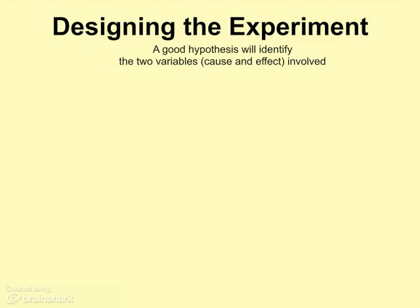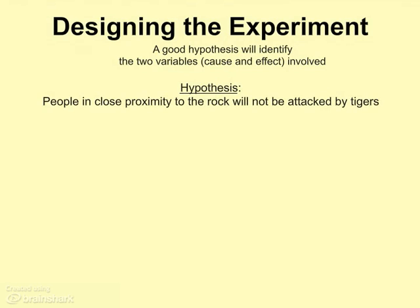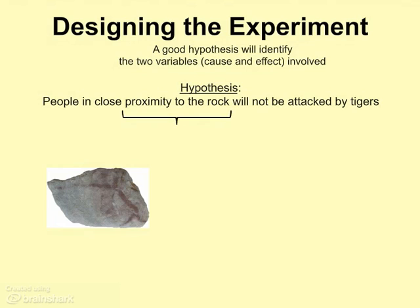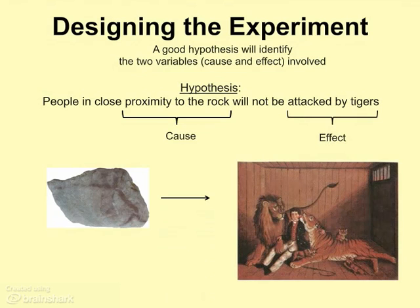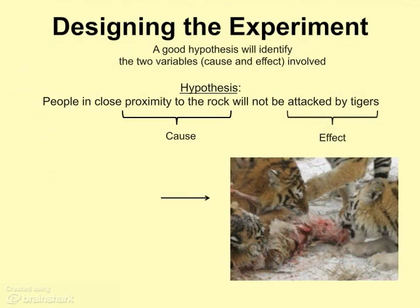Remember in class how I told you about my tiger repellent rock. I said that people who were in the same room as the rock would not be attacked by tigers. That means the proximity to the rock was one of the variables — that was what I was saying was causing someone to not be attacked by tigers. So the attack by tigers, or the lack of attack by tigers, was the effect of being in close proximity to the rock. Of course, if the rock wasn't there, that meant that people were going to be attacked by tigers.